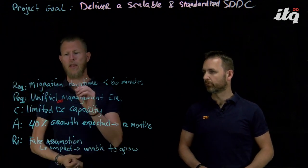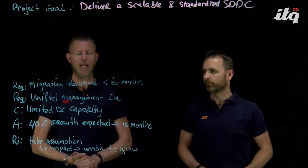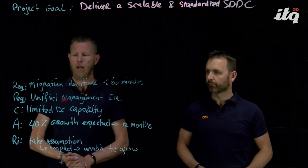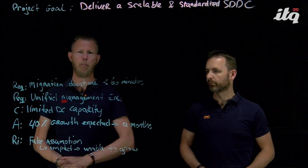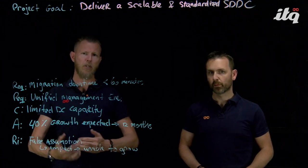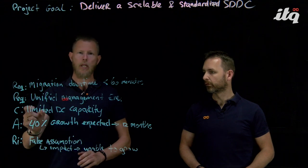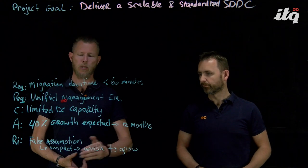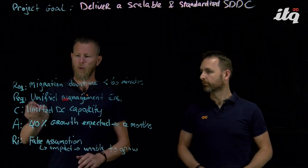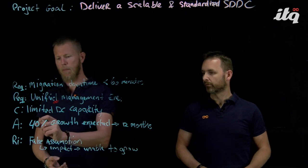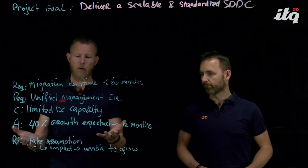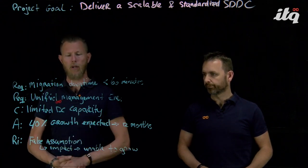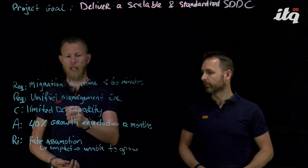We have a non-functional requirement that we need a unified management plane. We have a constraint of limited data center capacity, so we have limitations in terms of scaling out. What we are assuming is that there's a 40% growth expected in the next 12 months. This assumption combined with this constraint automatically creates a risk — we have a false assumption, and the impact is that we are unable to grow based on the expected growth and limited DC capacity.